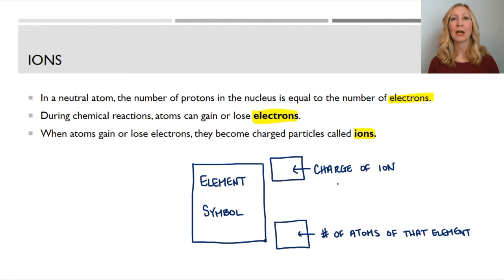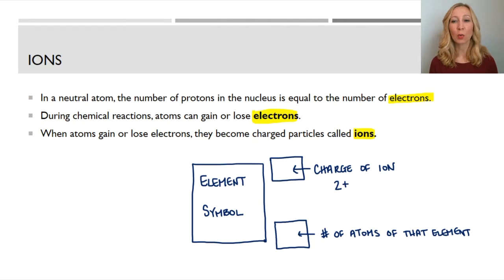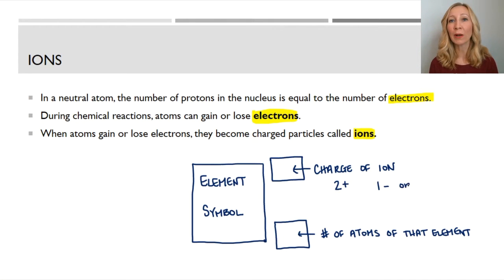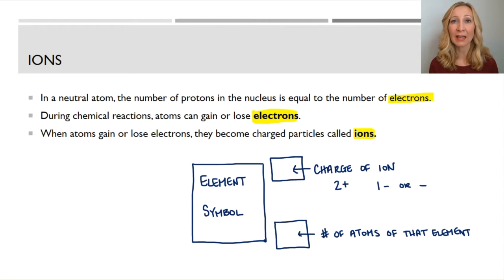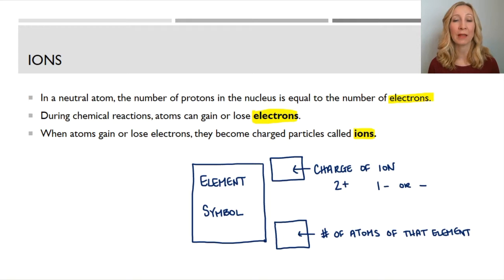That number indicates how many electrons have been gained or lost and the resulting overall charge of the ion. For example, if an atom has 5 protons and 5 electrons and it has lost 2 electrons, it now has a positive 2 charge, so we write that as 2+. If an atom gains an electron, we write that charge as 1− because it has gained 1 electron with a negative charge. This superscript is where we record the charge of the ion after it has gained or lost electrons.